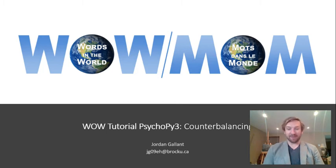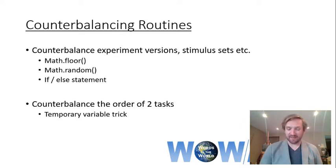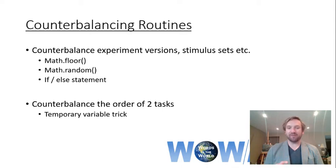In this video I'm going to go over counterbalancing. The first thing I'll look at is how to counterbalance different experiment versions and different stimulus sets. To achieve this we're going to use two different functions: the math.floor function and the math.random function, and we'll also be looking at some different if and else statement syntax. In the second part of the video we're going to look at how to counterbalance the order of two tasks in an experiment, using the same tools plus a temporary variable trick to switch the values of two variables.